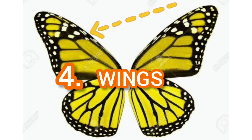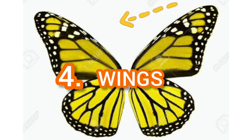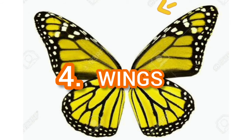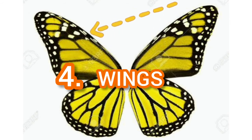Now let's spell wings: W-I-N-G-S. Number four body part of the butterfly is called wings.